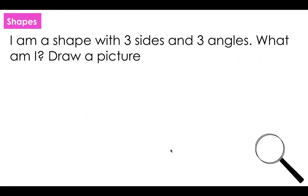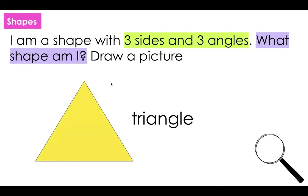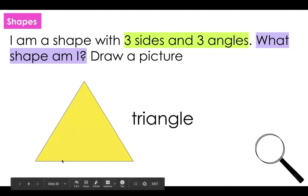Shapes. I am a shape with three sides and three angles. What am I? Draw a picture. Go ahead and pause the video to figure this out. Three sides and three angles — I need to figure out what shape am I? I am a triangle because I have three sides and three angles.